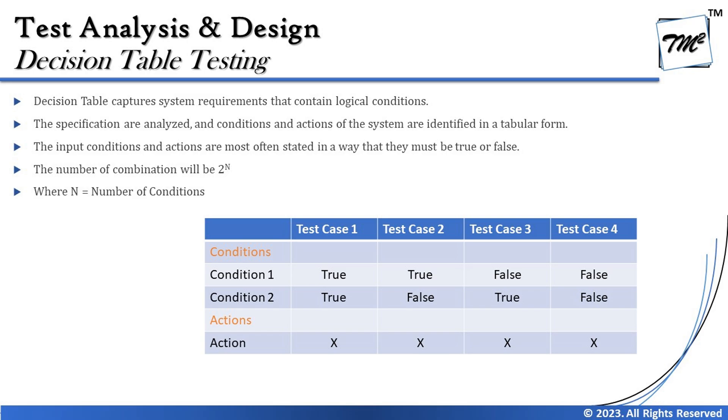The number of combinations is always calculated as two raised to the power of n, where n is the number of conditions. For example, if you have two conditions — say condition one is a bank card type (debit, credit, with many providers like Visa, Master, Amex, Diners) and condition two is age — instead of exhaustive permutations, decision table lets you organize this cleanly.